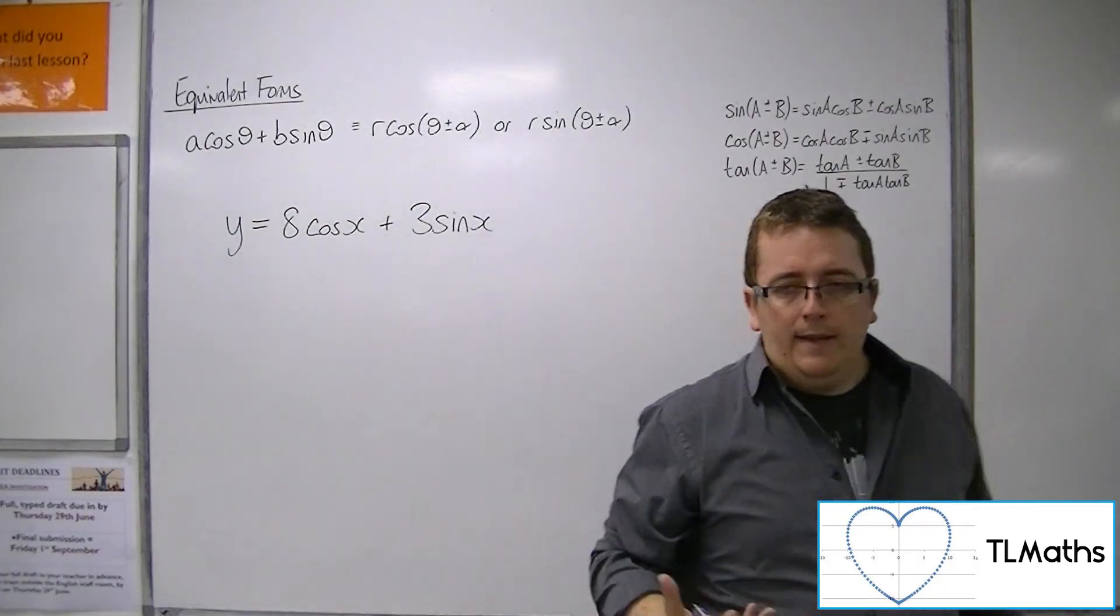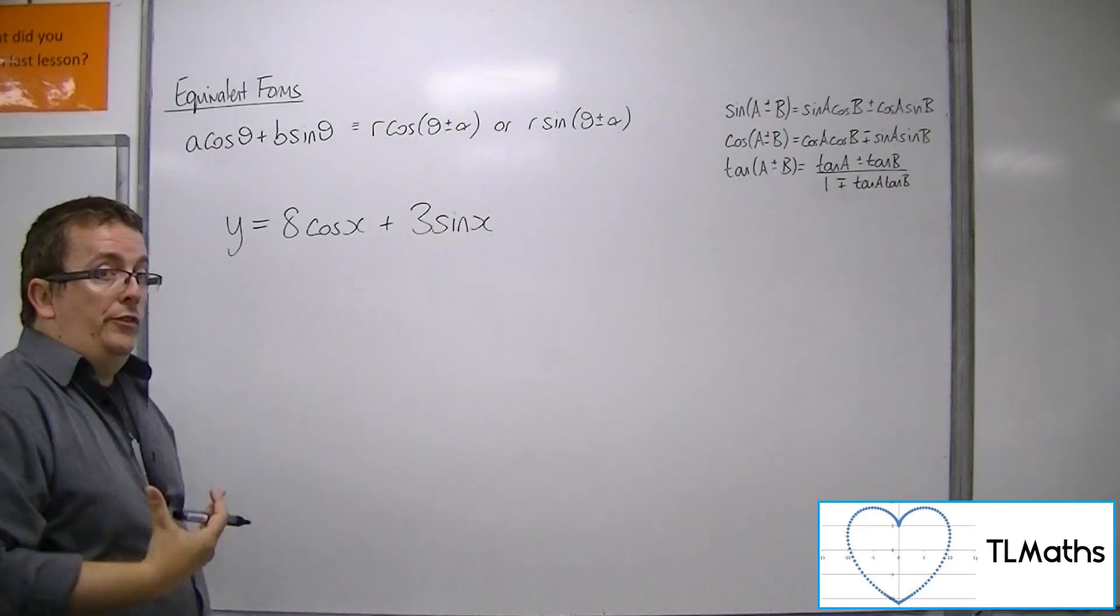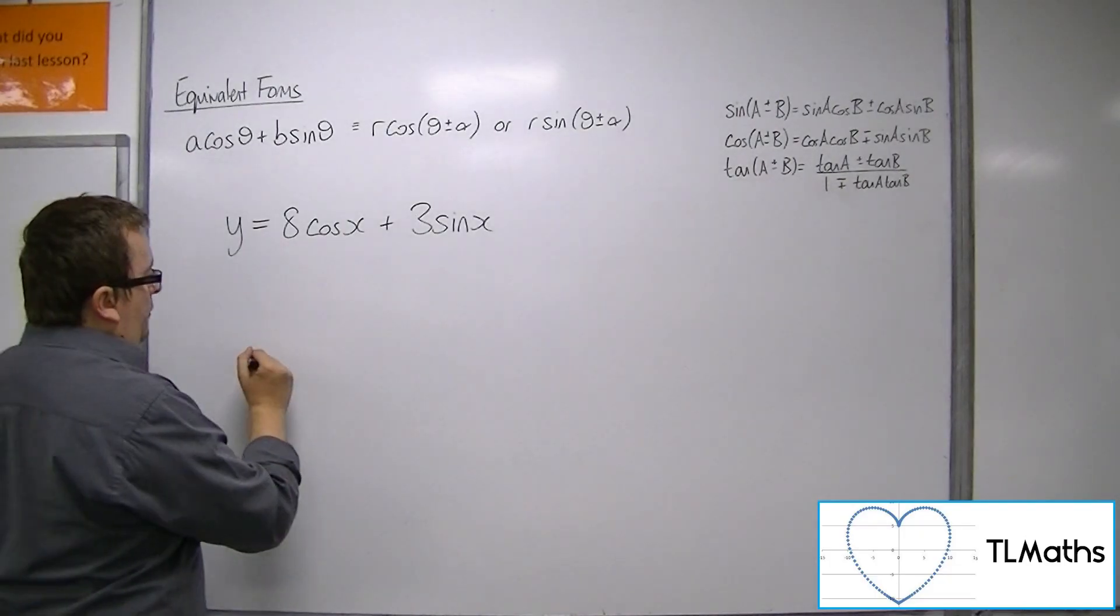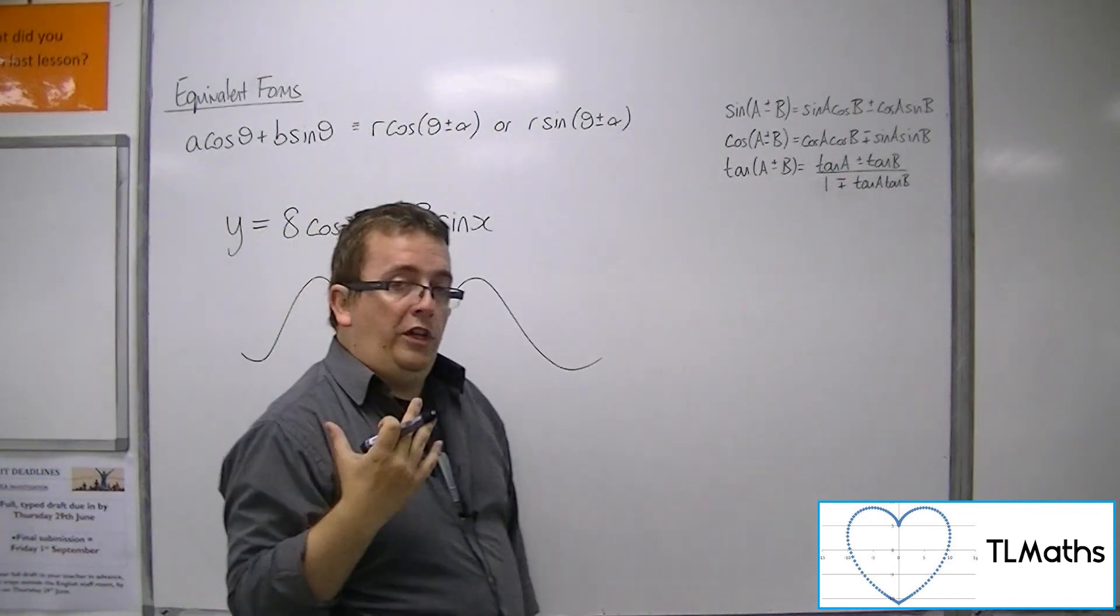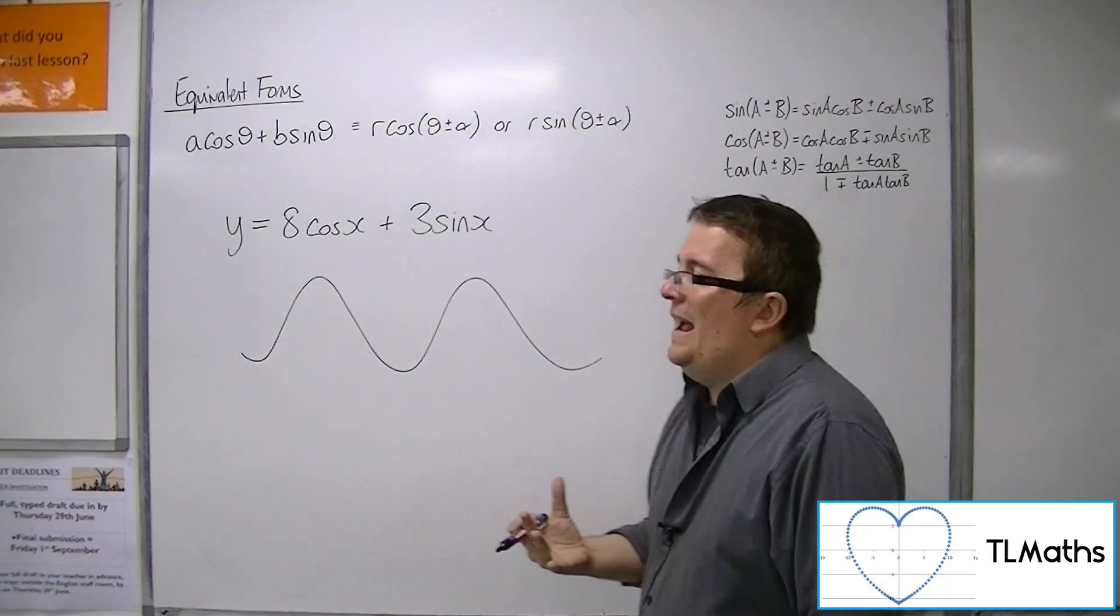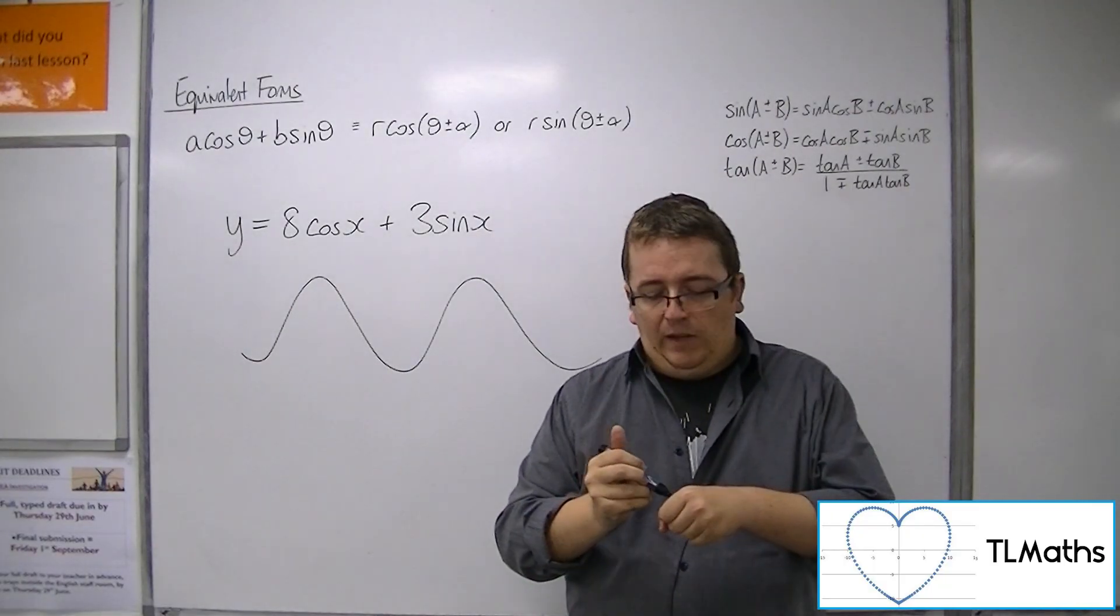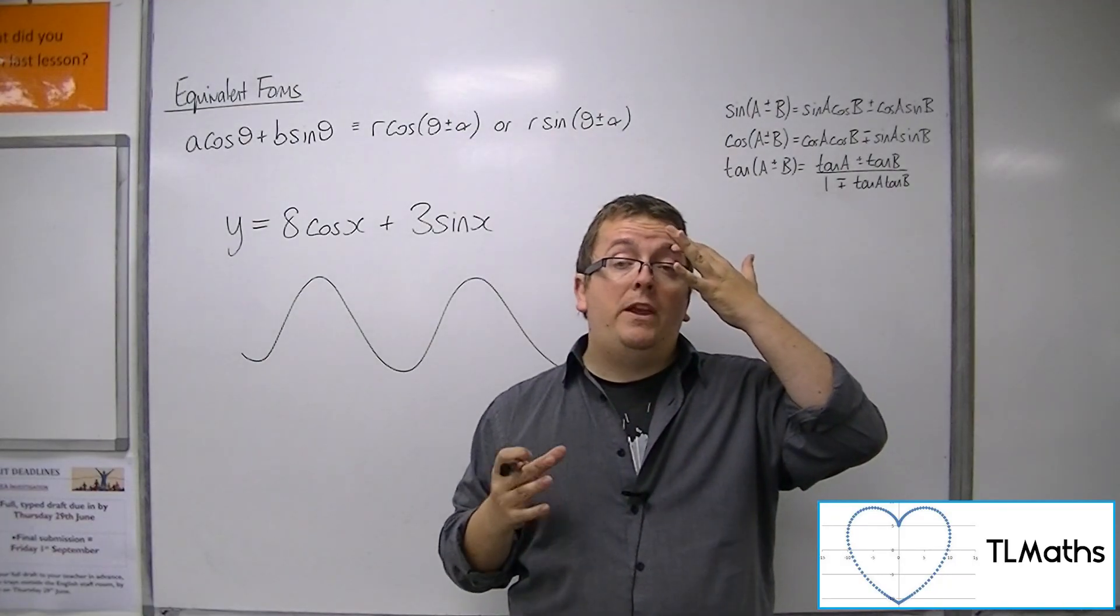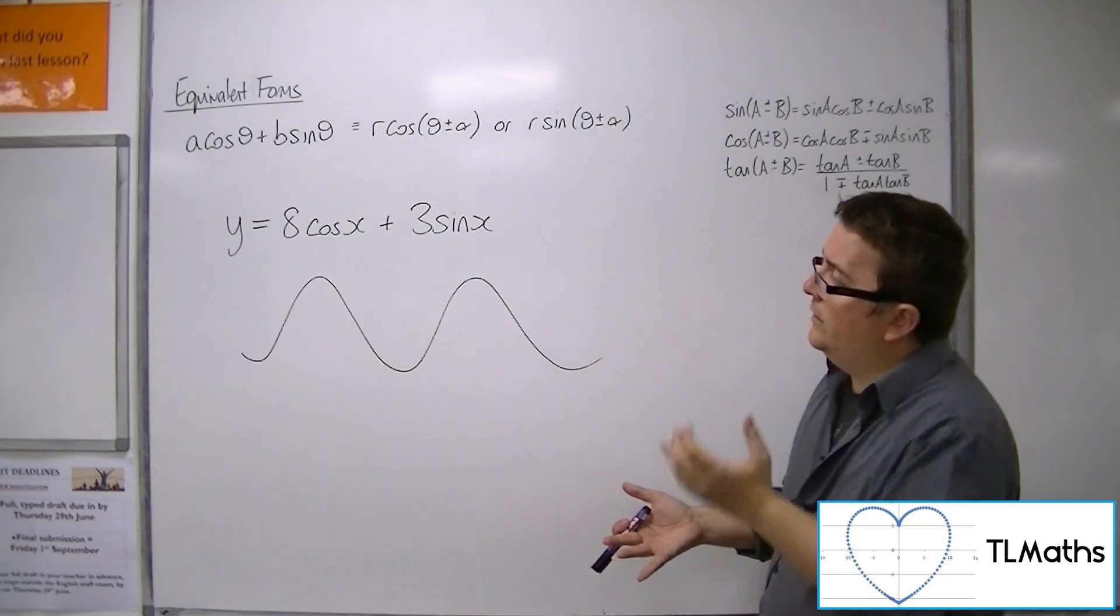Then what you should find is that you get some form of sinusoidal graph, one that looks like a sine or cosine curve, where it hasn't been stretched parallel to the x-axis in any way. So it's still got a period of 2π, or 360 degrees.